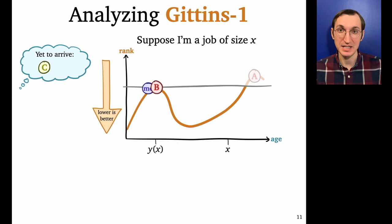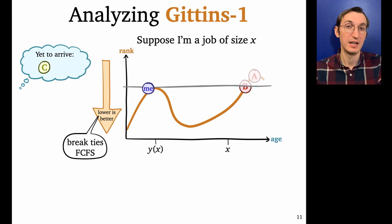Okay, so at this peak, it now actually becomes important how we break the tie between me and B, because whoever gets served first at this peak is going to go through this whole valley in the rank function. And so we're going to use the convention that we break ties first come first serve. And so B is going to go through this whole valley of the rank function. It's going to get served until it crosses the gray line at an age we'll call Z of X.